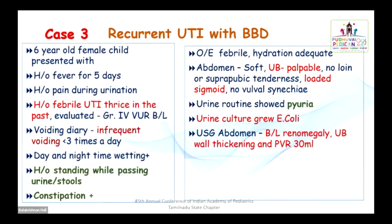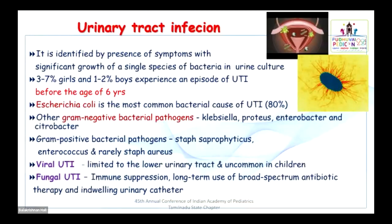Bowel-bladder dysfunction is usually diagnosed in children more than 5 years of age with recurrent UTI. The history of infrequent voiding, standing while passing urine and stools, postponing voiding, and constipation favor BBD. Urinary tract infection is identified by the presence of symptoms with significant growth of a single species of bacteria in urine culture. 3–7% of girls and 1–2% of boys experience an episode of UTI before the age of 6 years. E. coli is the most common bacterial cause of UTI.